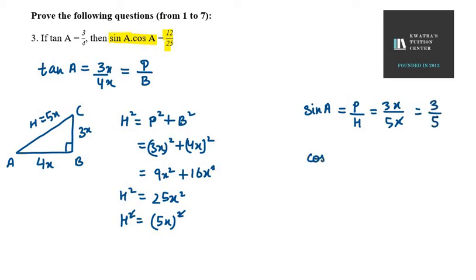Now, we will take cos A value. What is cos A? It's B over H, base over hypotenuse. What is base? 4x. What is hypotenuse? 5x. So x, x cancel. 4 over 5.